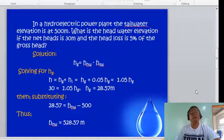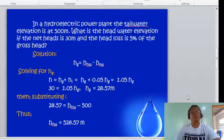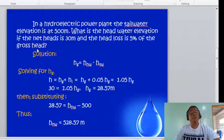Another example: In a hydroelectric power plant, the tail water elevation is 500 meters. What is the head water elevation if the net head is 30 meters and the head loss is 5 percent of the gross head? The gross head equals head water minus tail water.